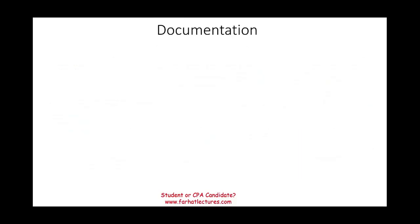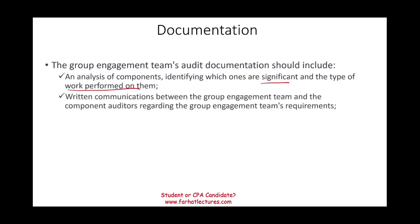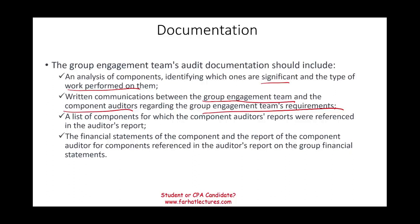What type of documentation do you have to have? The group engagement team should document at least the following: first, an analysis of components identifying which ones are significant and the type of work performed on them. Second, any written communication between the group engagement team and the component auditor — all communication regarding the engagement team requirements has to be documented. Third, a list of components for which the component auditor's report was referenced in the auditor's report. Also, the financial statements of the component and the report of the component auditor for the components referenced in the auditor's report on the group financial statement — simply put, a list of all the paperwork.